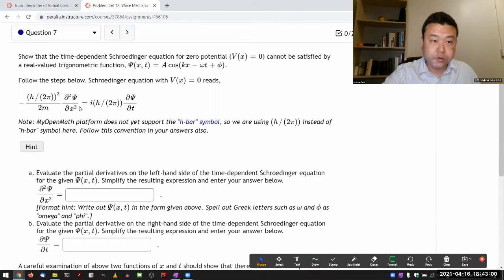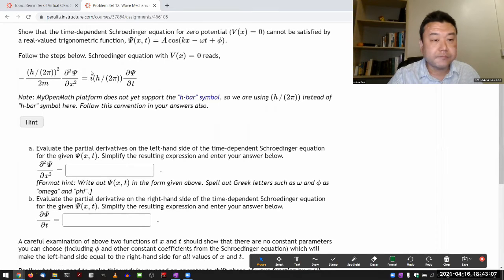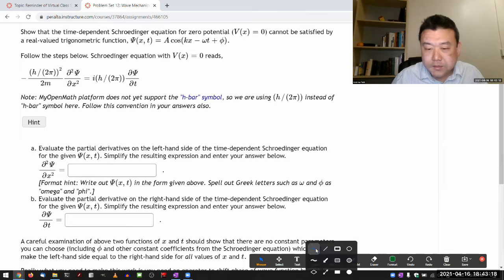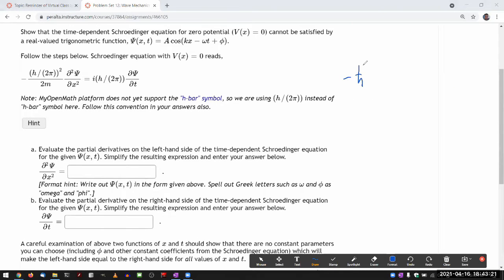So let's go through the tutorial and see that that is the case. Let me write things out so that I have something to refer to. So this is the Schrödinger equation: minus h bar squared over 2m, the second order partial derivative in x, is equal to i h bar and the first order partial derivative in time. And I'm trying to evaluate is psi of x t equal to a cosine of kx minus omega t plus phi solution.